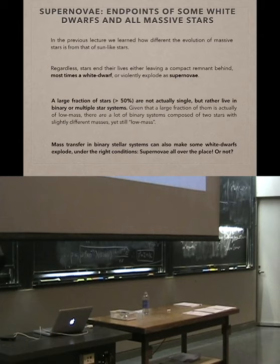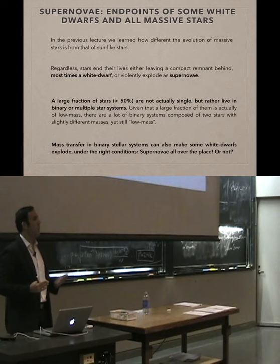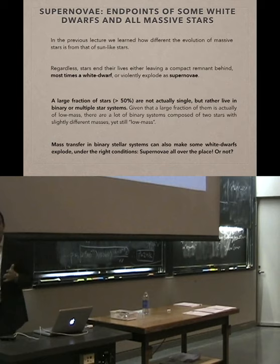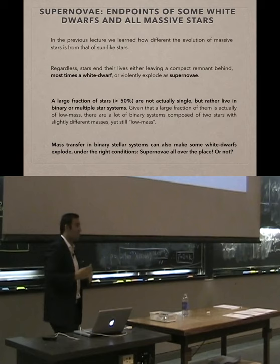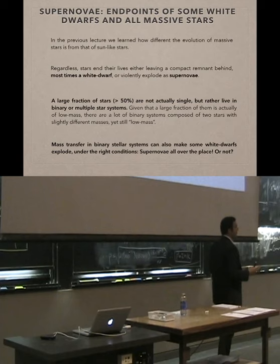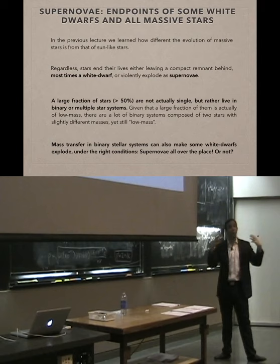Stars evolve differently for different masses. Stars with masses like our sun will have a rather quiet lifetime and will end their lives as white dwarfs after puffing out their external material. Massive stars — more massive than 8 to 10 to 15 solar masses — will end up forming an iron core after going through the whole onion structure, which will collapse and produce a very energetic core-collapse supernova explosion.